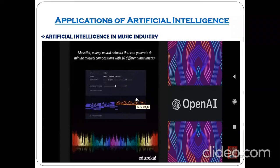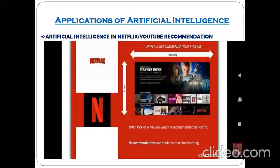The next example is artificial intelligence in Netflix and YouTube recommendations. Over 75% of what you watch on Netflix is recommended by the platform, and these recommendations are made by machine learning. I have shown a live example of YouTube recommendations in a previous video.